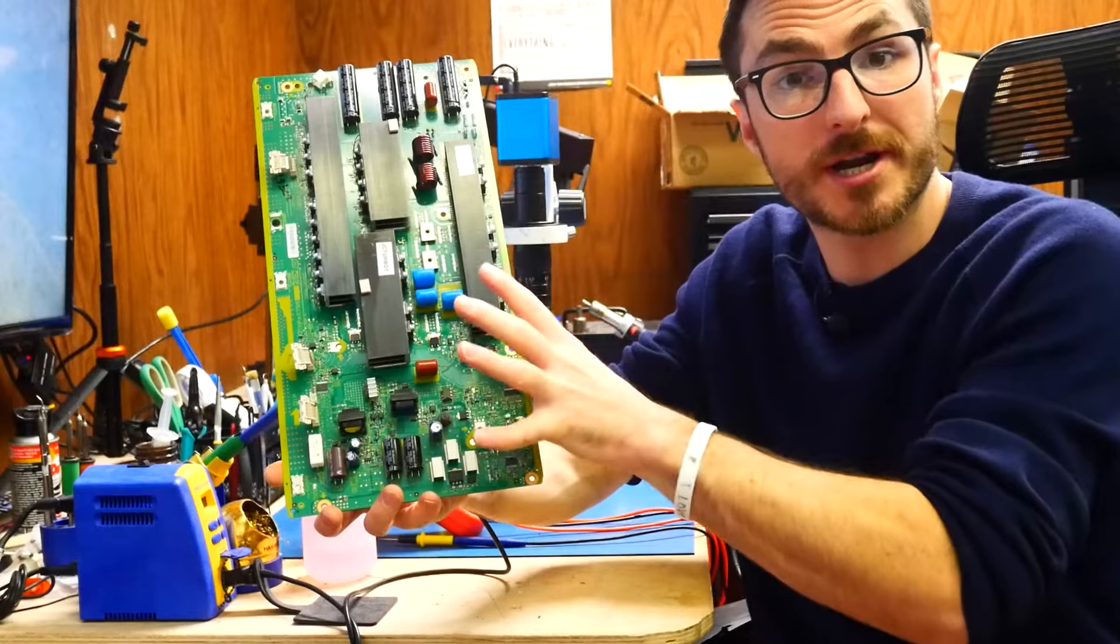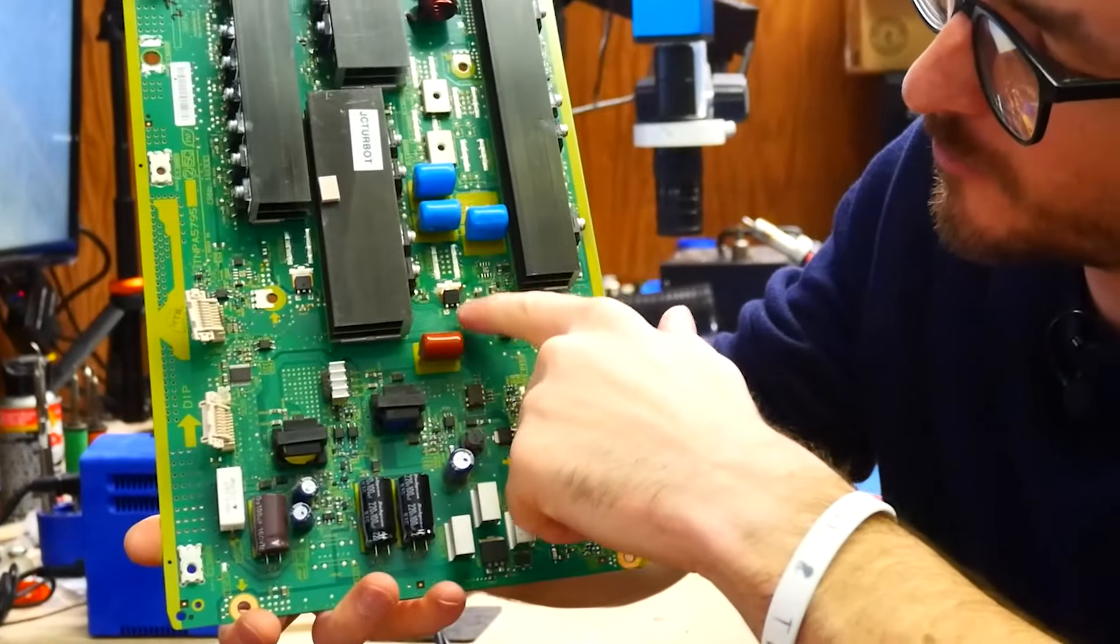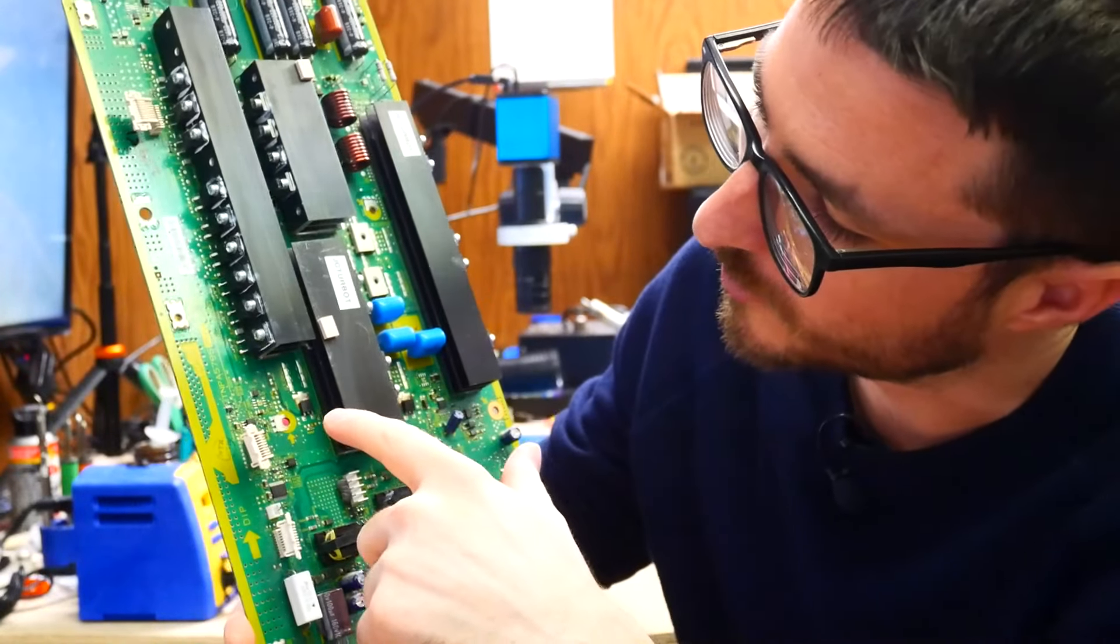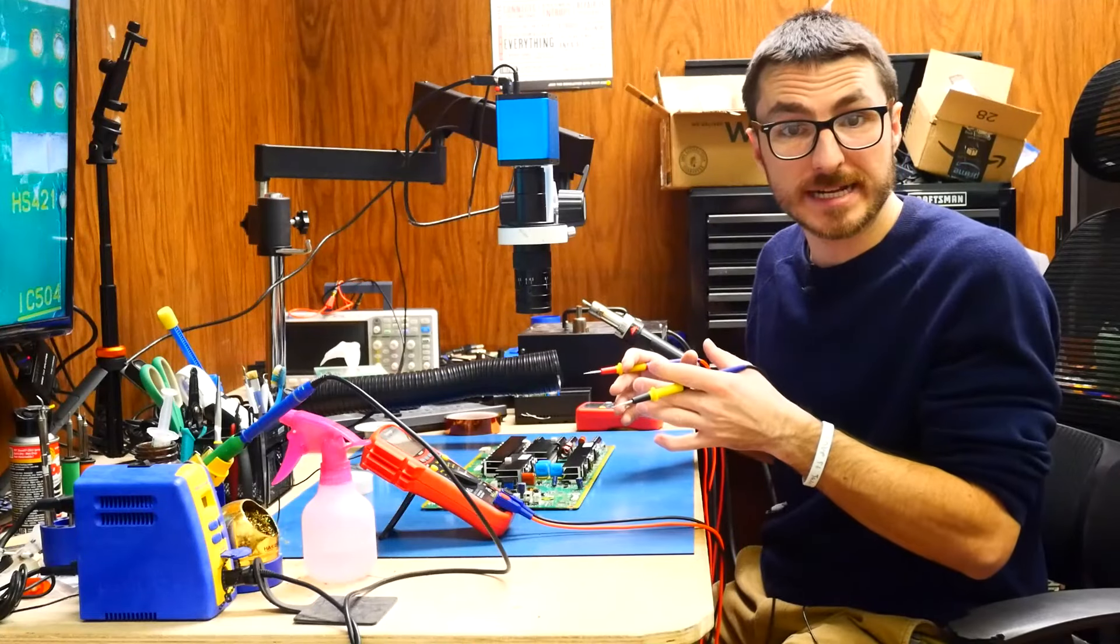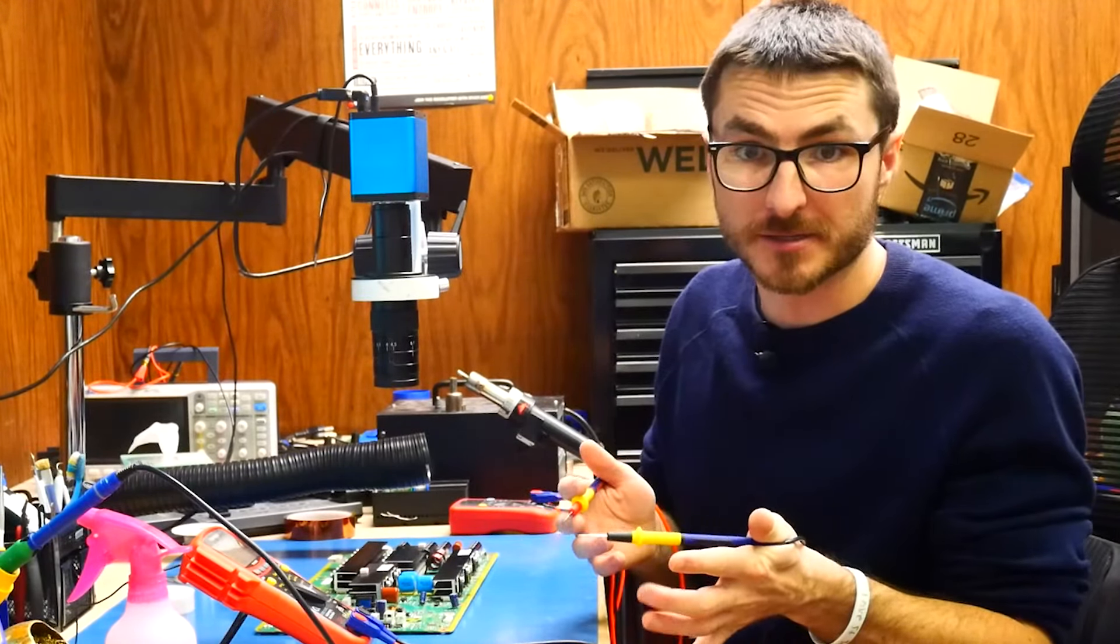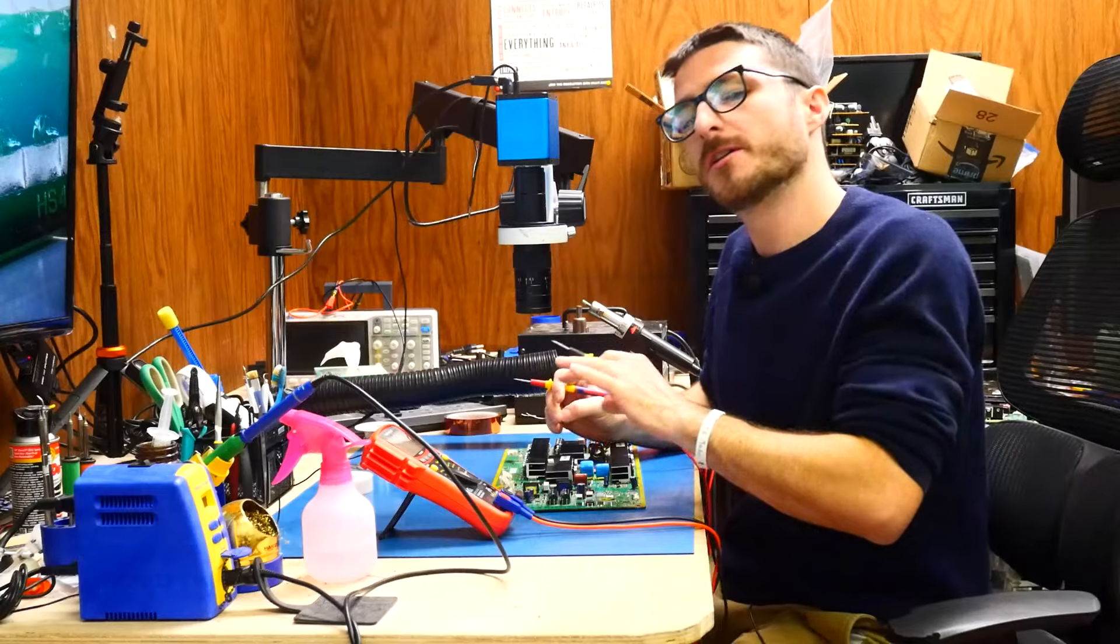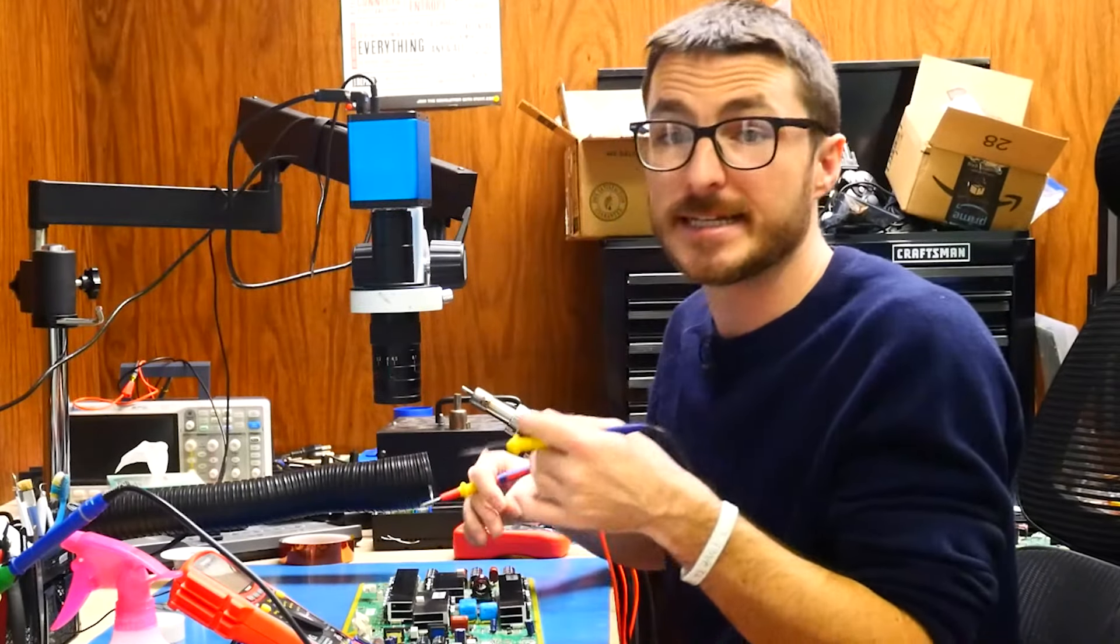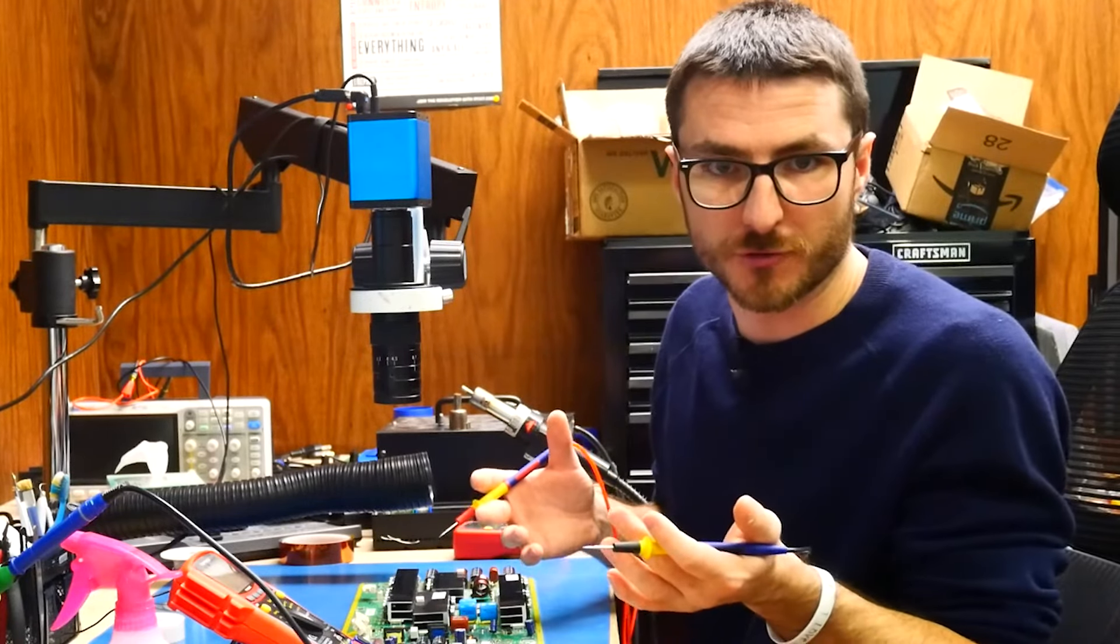Now to give you a better idea of where it is on the board, it is right over here. Now we have two of these and the other one is right over here. So the reason I say there are two of them is because they are in parallel. So if one goes out, usually both have to be replaced.